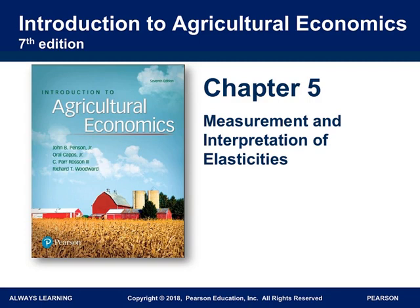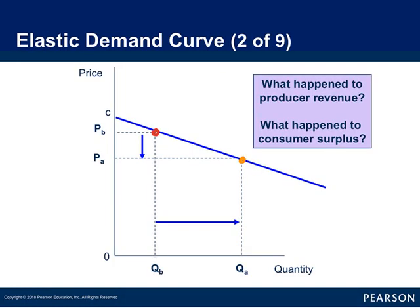This is our second lesson on Chapter 5, discussing measurement and interpretation of elasticities. We recognize that if the price changes from the red point, from P-A, and goes down to the orange point, P-B, then there's going to be a decrease in price and a significant increase in quantity demanded on an elastic demand curve.